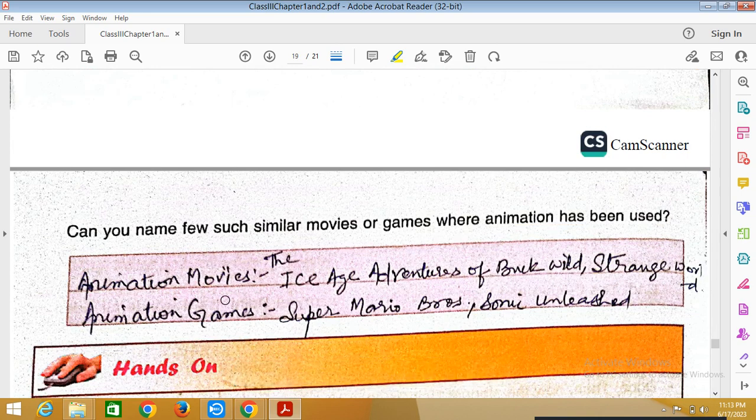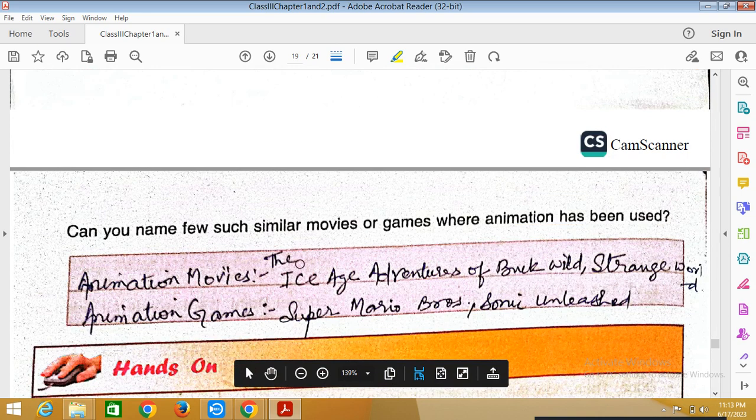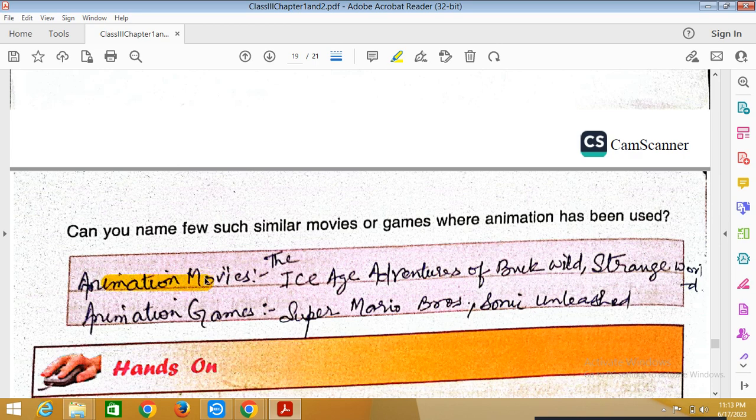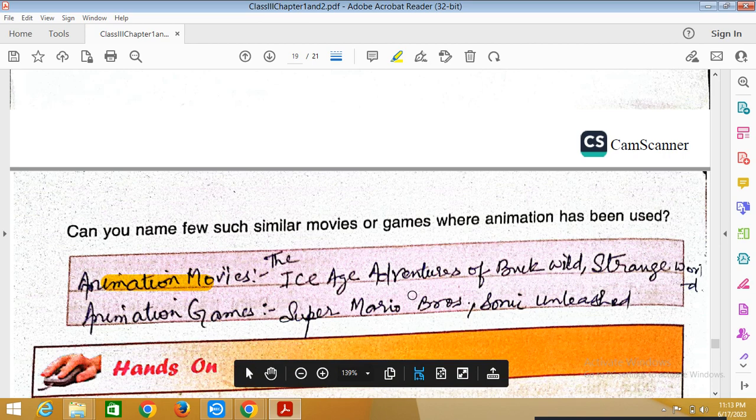Can you name a few such similar movies or games where animation has been used? Like The Ice Age Adventures of Buck Wild, Strange World, animated games like Super Mario Bros, Sonic Unleashed - these are the animated games.